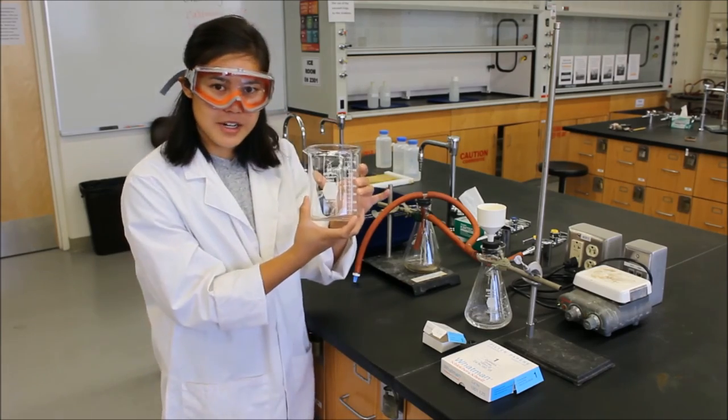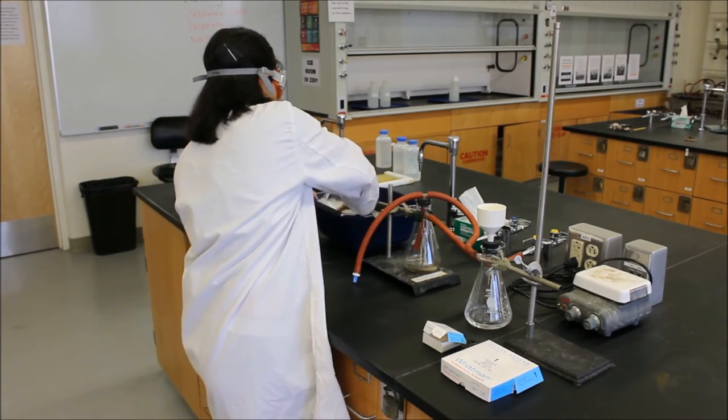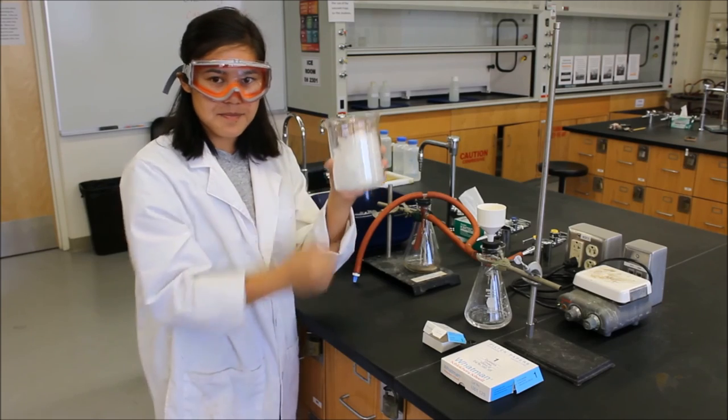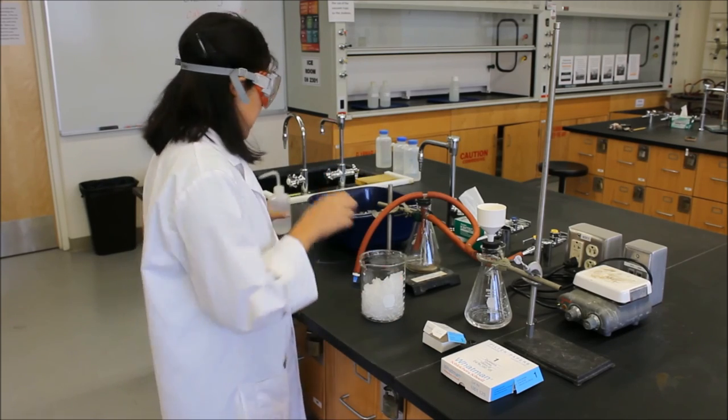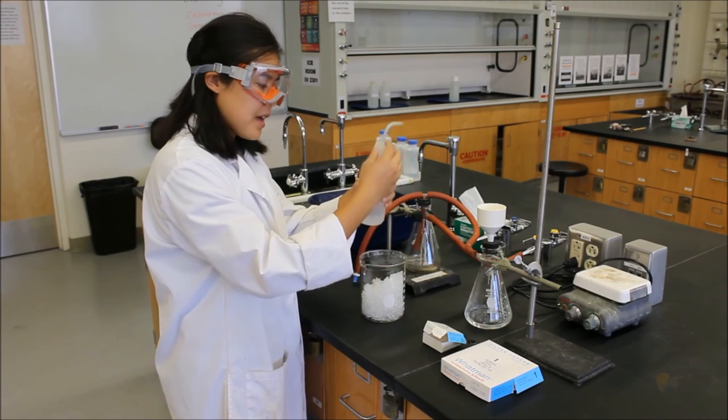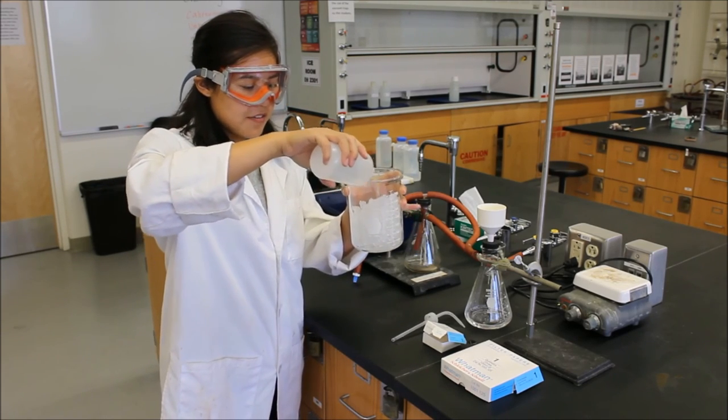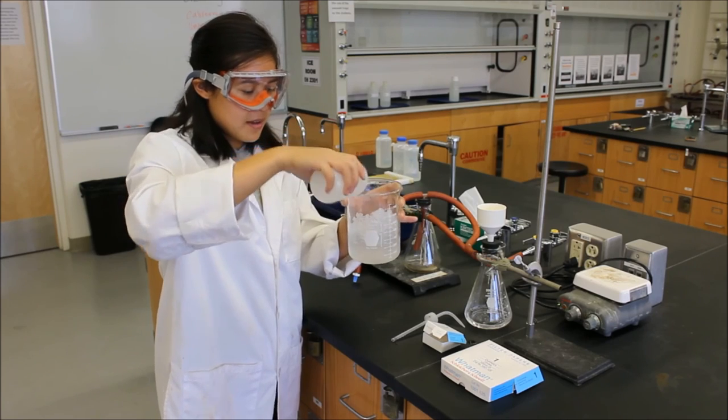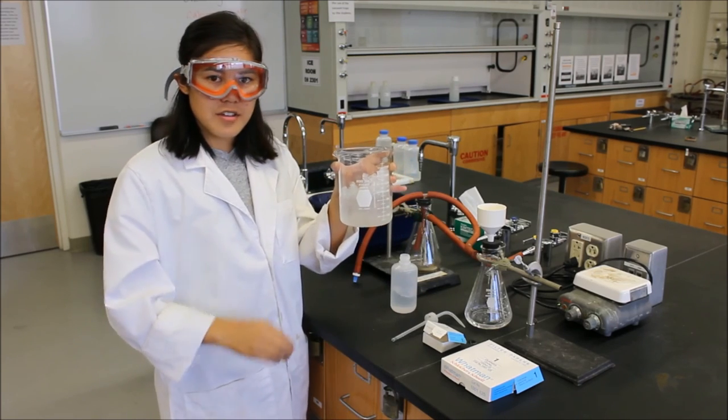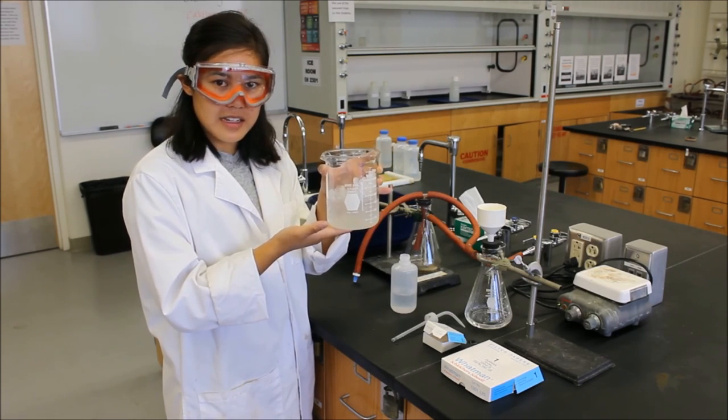So, you get a large beaker, put some ice in it, and you put some water in it. Now, the reason that we have to put some water in it is because we want to increase the surface area of the bath so that it cools your beaker nice and evenly.